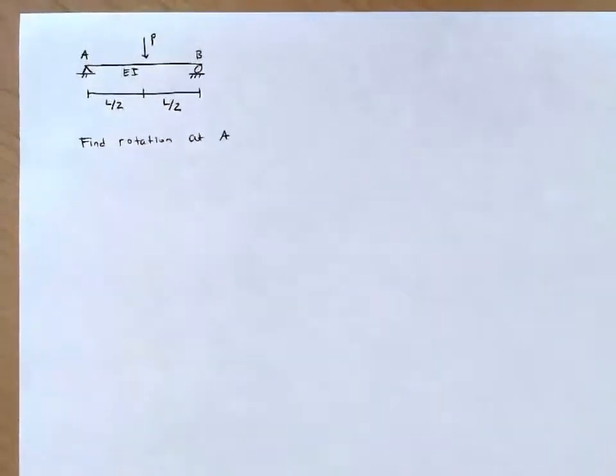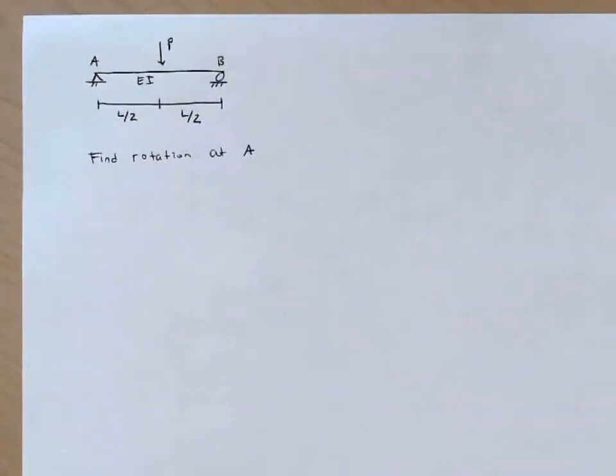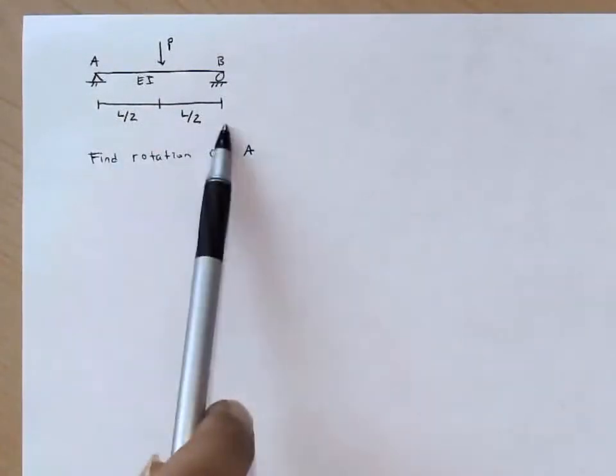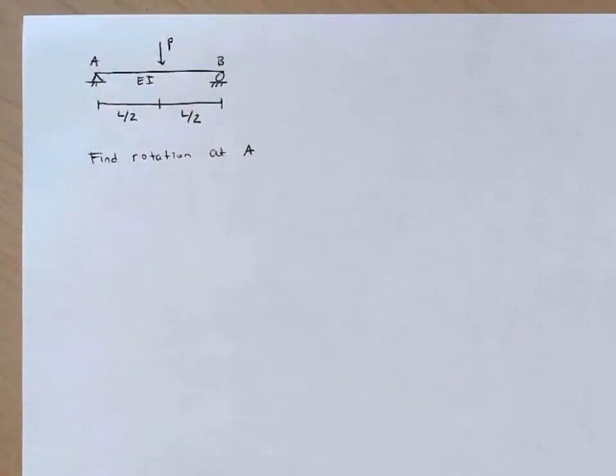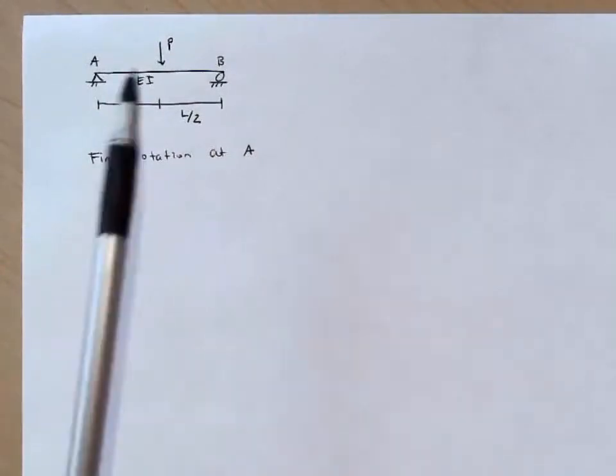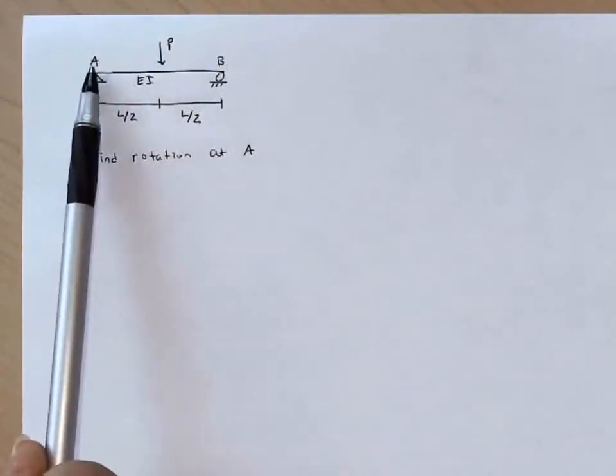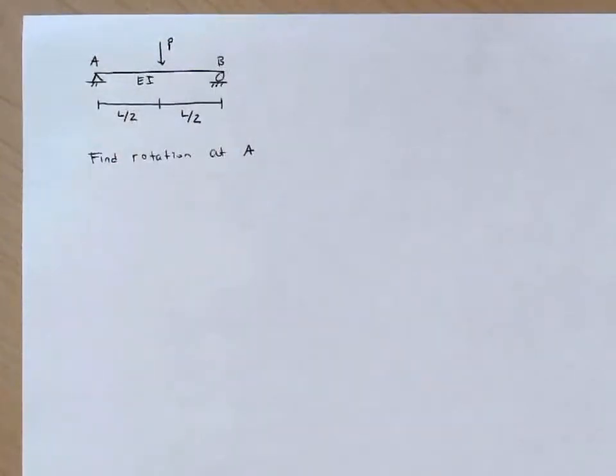Welcome. In this example, we're going to be using the method of virtual work to calculate the rotation at the left end of this simply supported beam. So what we have is a simply supported beam. It's of a total length L, with a point load P in the middle. It has a flexural stiffness EI, and the ends have been identified as A and B.